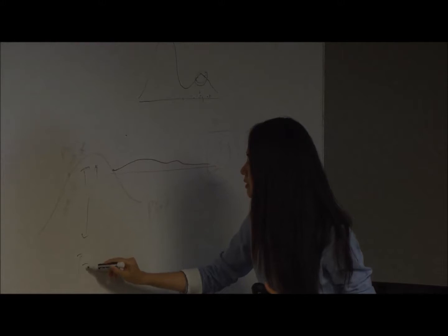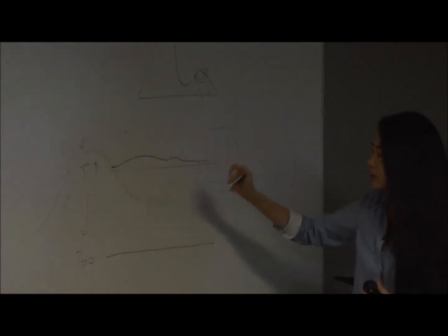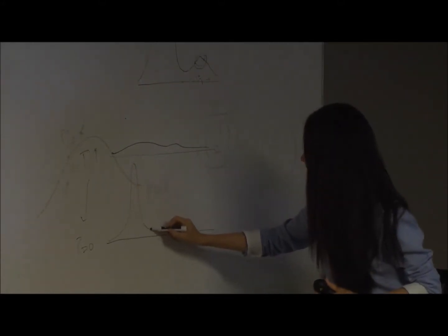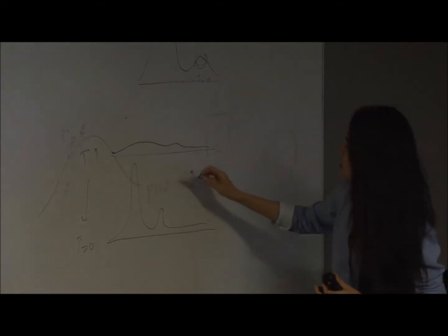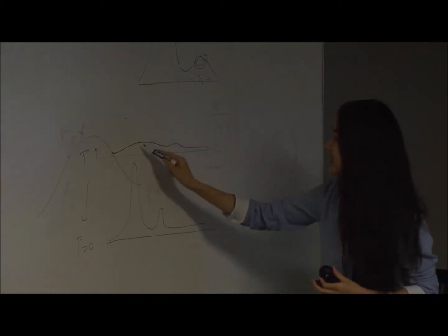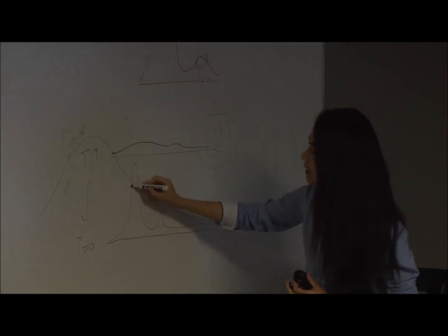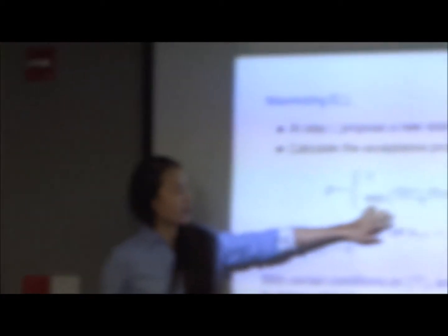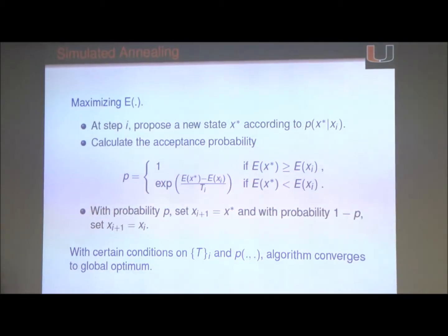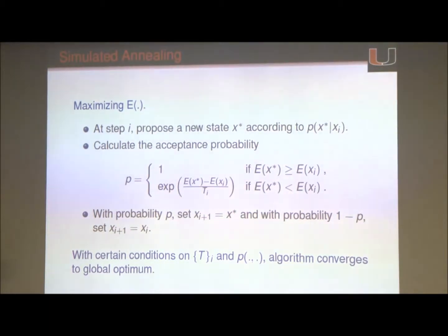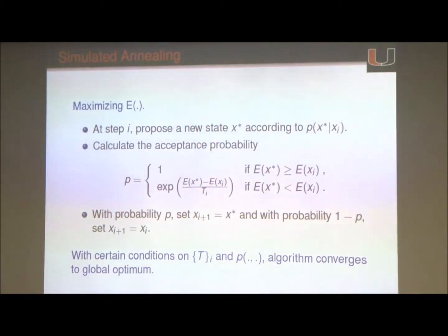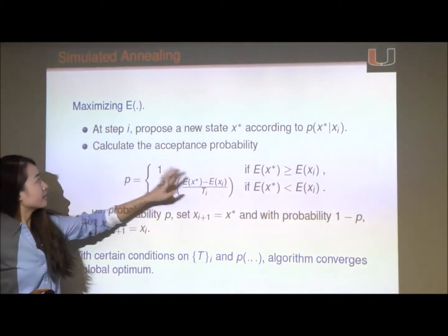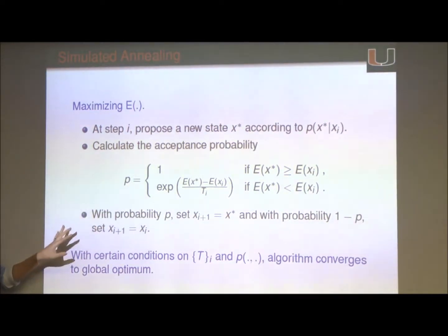As temperature goes down to 0, your objective function keeps getting spikier and spikier, and eventually traps your sampler in the good region, ultimately identifying the global maximum. The idea of incorporating the temperature parameter is that we want to find the good region first, and then let the sampler explore the neighborhood of the current state to identify the global maximum. In practice, the objective function's dimension could be very large and the surface very complex, so incorporating simulated annealing usually helps a lot with optimization.